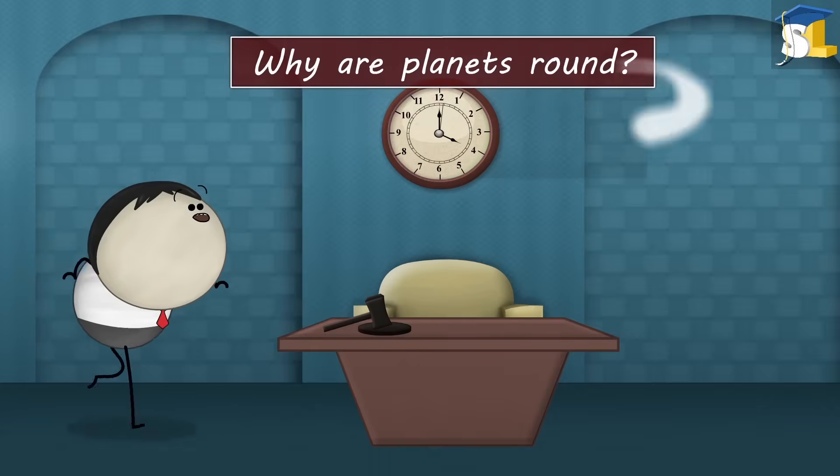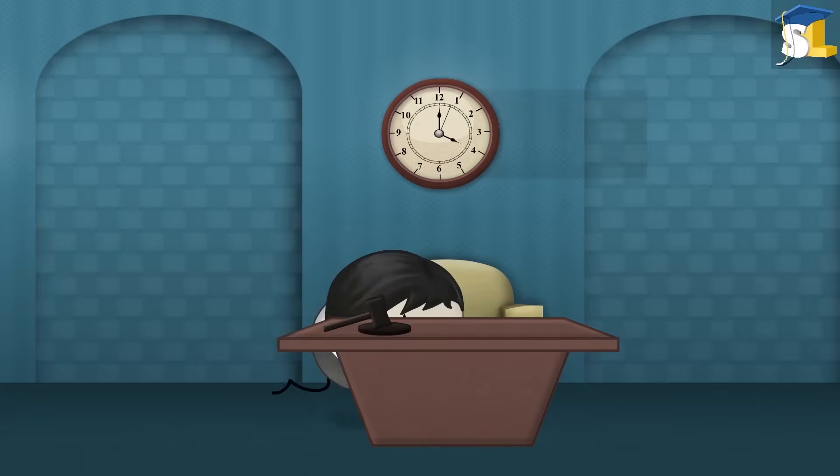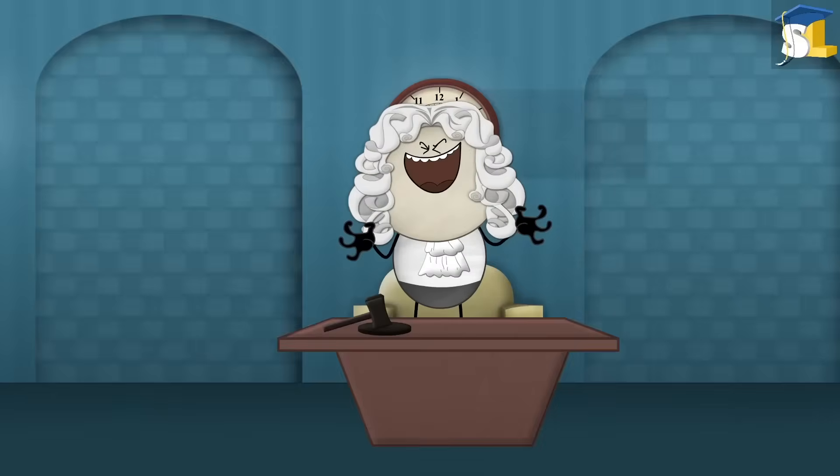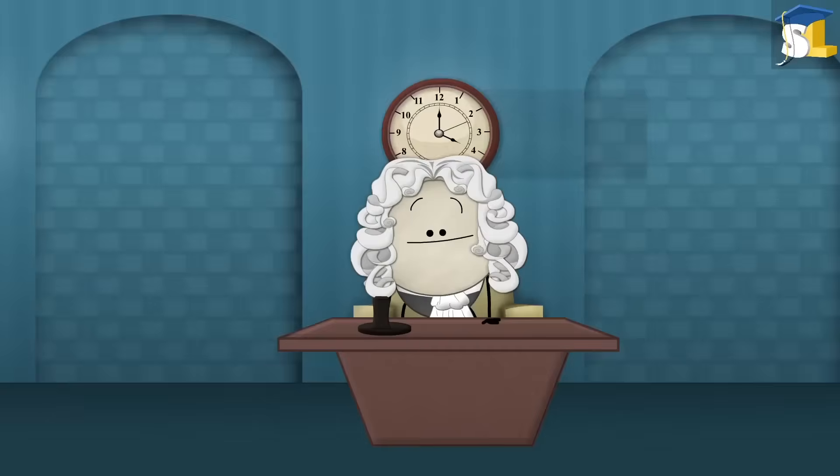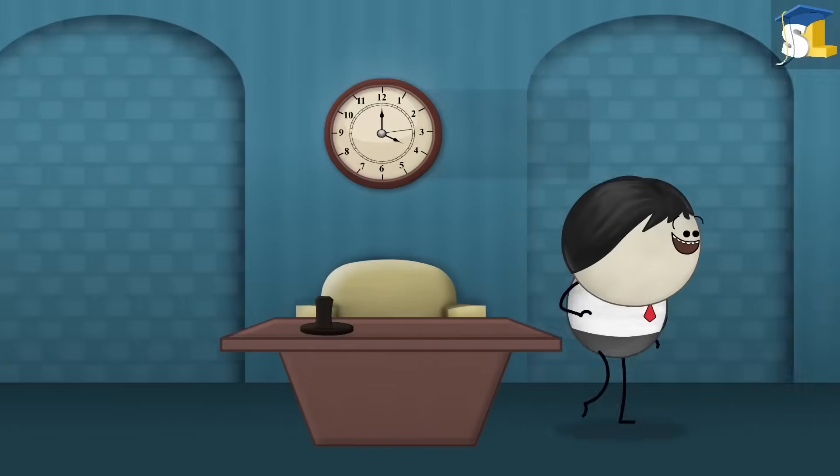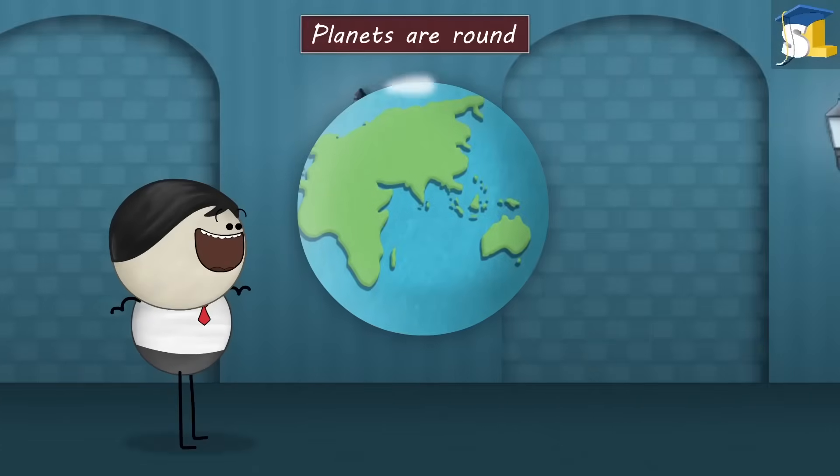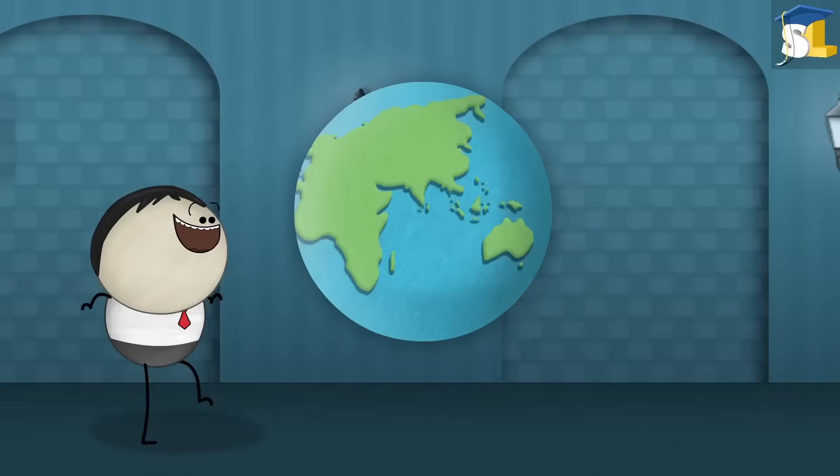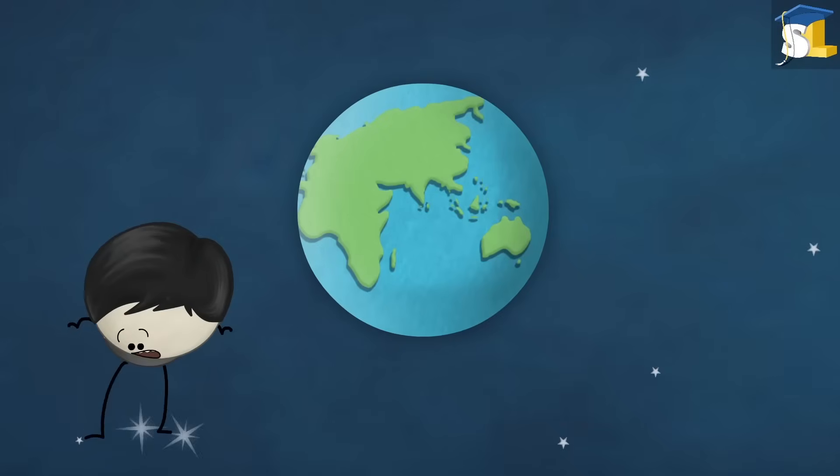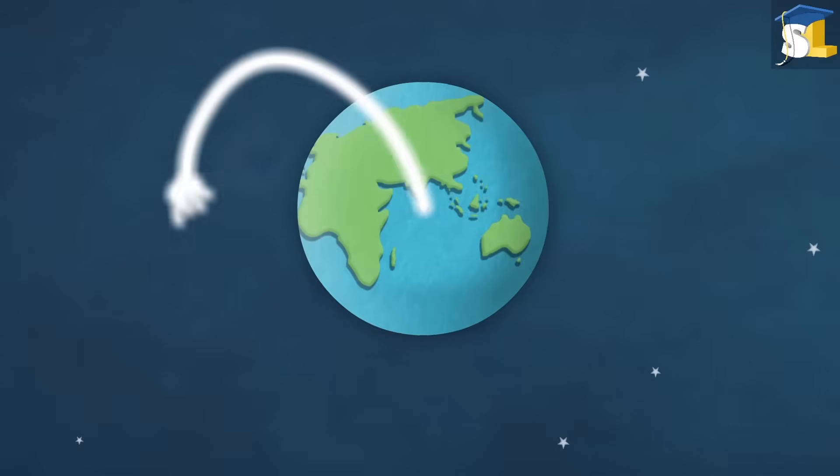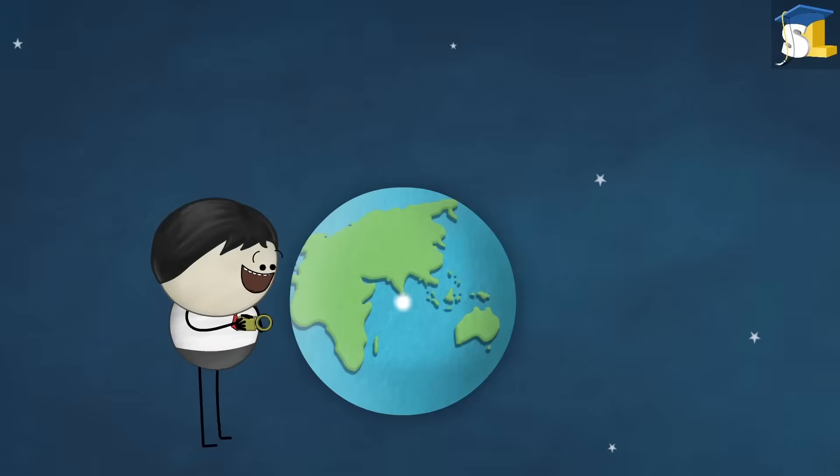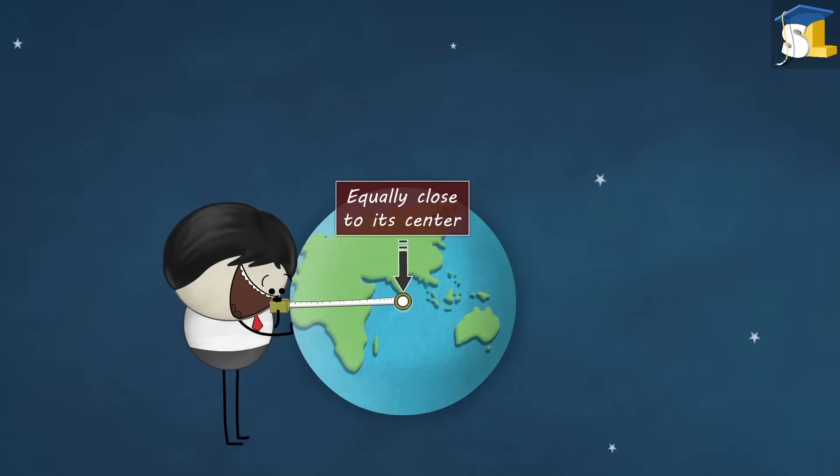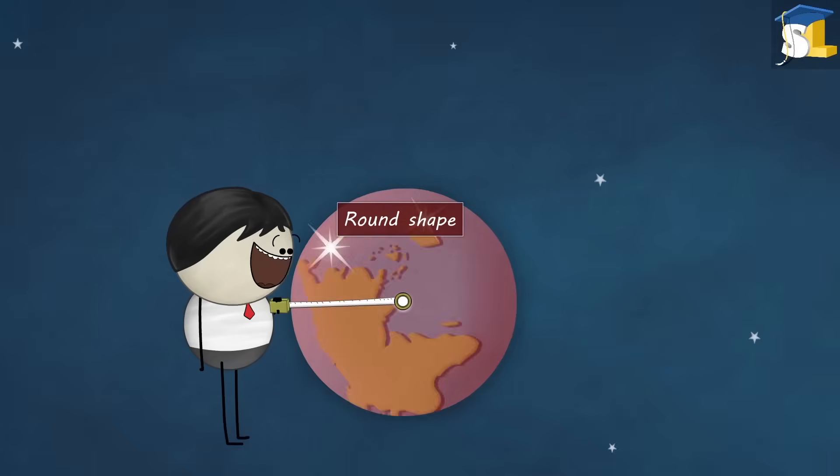Gravity. Why are planets round? Because I commanded them. You wish. Planets are round because of the force of gravity. Gravity acts as if it originates from the center of a planet and pulls each point of the planet towards it. Hence, the only way for everything on the surface to be equally close to its center is to form a round shape.